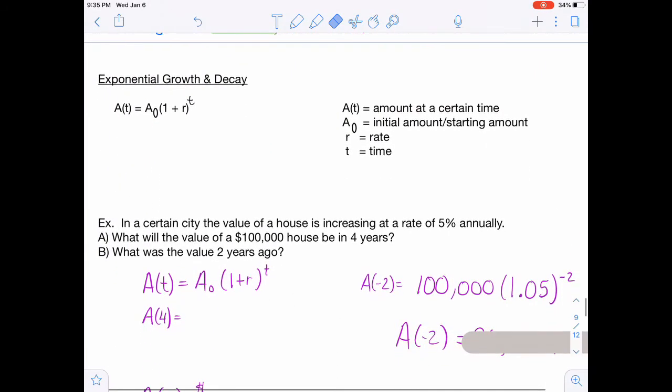Also in this section, we have exponential growth and decay. So there is this formula that you will need to know. It says a of t is equal to a sub 0 times the quantity 1 plus r to the t. So then over here we have what those different things mean. So a of t is the amount at a certain time. a sub 0 is the initial amount, or the starting amount. It's the amount when the time is 0. r is the rate, and t is time.